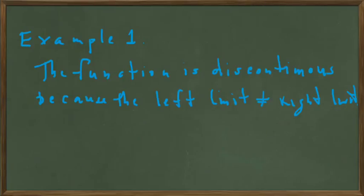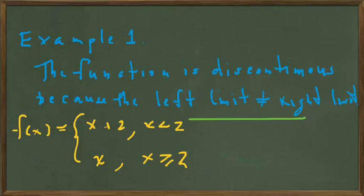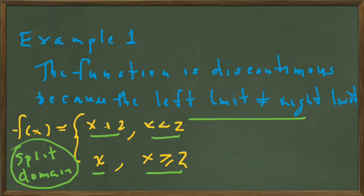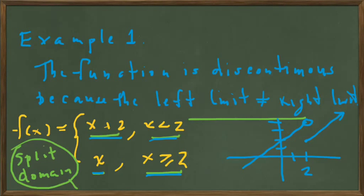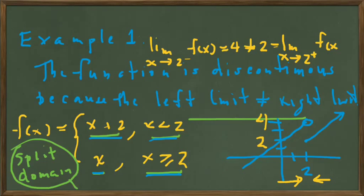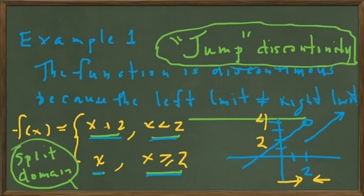The first example is where the function is discontinuous because the left limit does not equal the right limit. For x less than 2 the y value is x plus 2, and for x greater than or equal to 2 the function is f of x equals x — a split domain function. As x approaches 2 from the left, the function reaches y equals 4; from the right, y equals 2. Since those values are not equal, we call this a jump discontinuity.